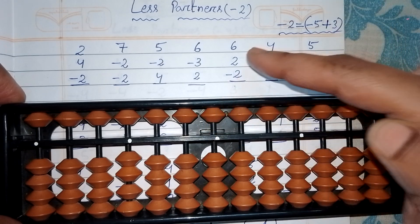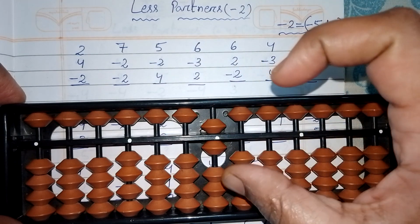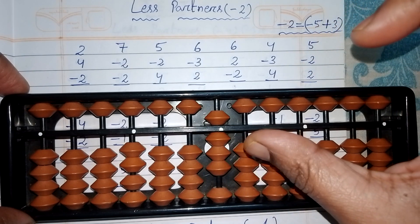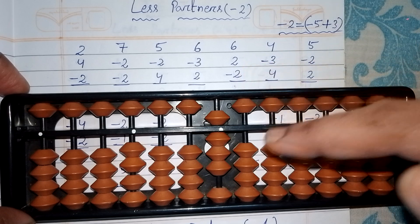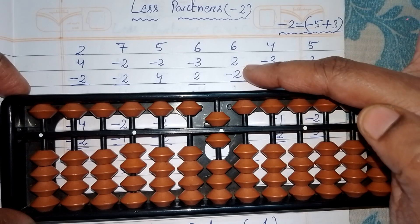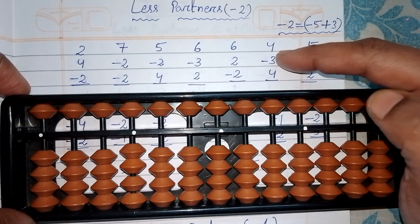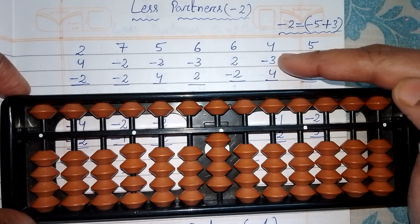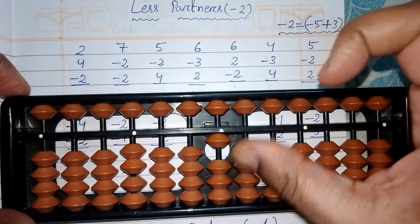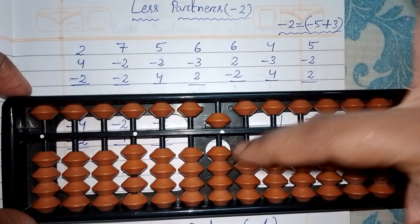Fifth question: 6+2-2. Add six. For adding two, we have two bits, so directly add two with thumb finger. For less two, subtract two with your index finger. Answer is six. Set zero. Sixth question: 4-3+4. Subtract three with index finger. For adding four, partner of four is one — pull down five and pull down one. Answer is five.